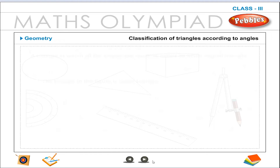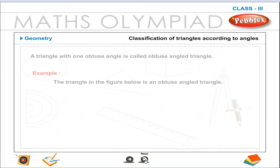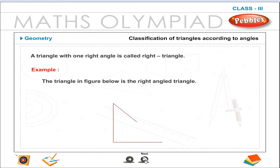Classification of triangles according to angles. A triangle in which all the angles are acute is called an acute angle triangle. A triangle with one obtuse angle is called an obtuse angled triangle. A triangle with one right angle is called a right triangle.